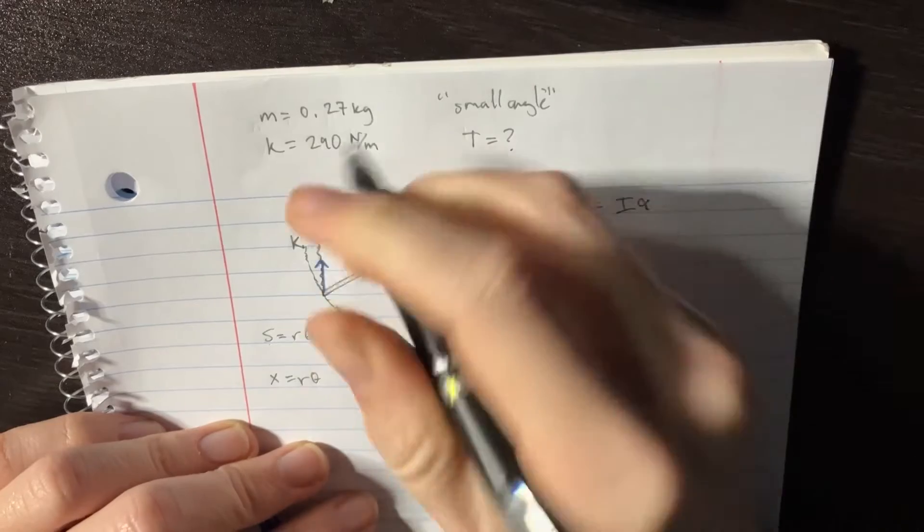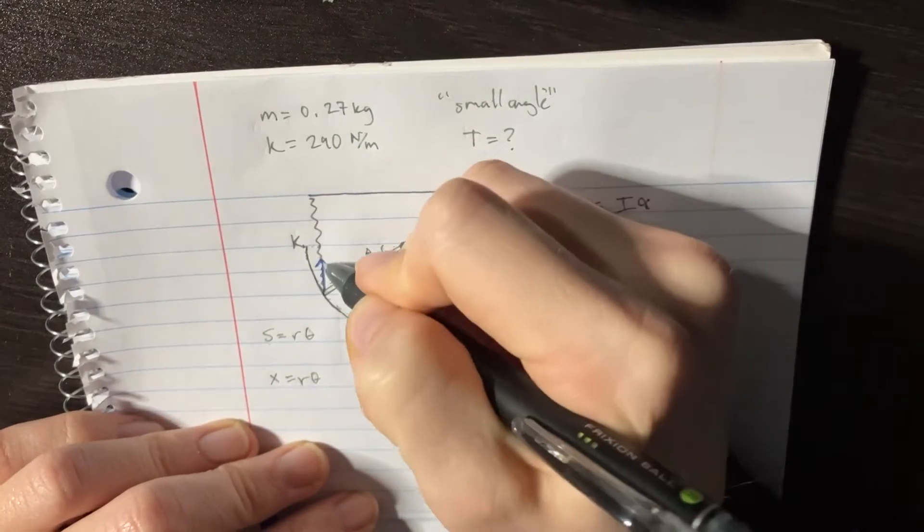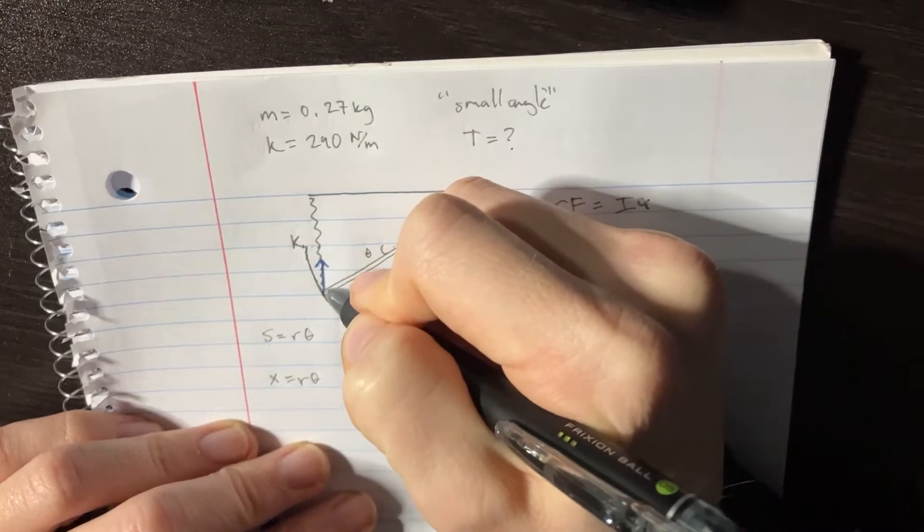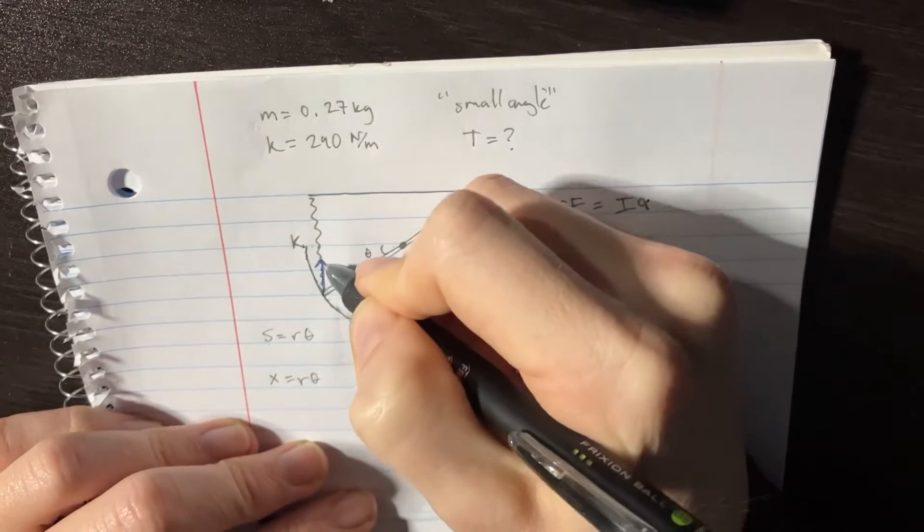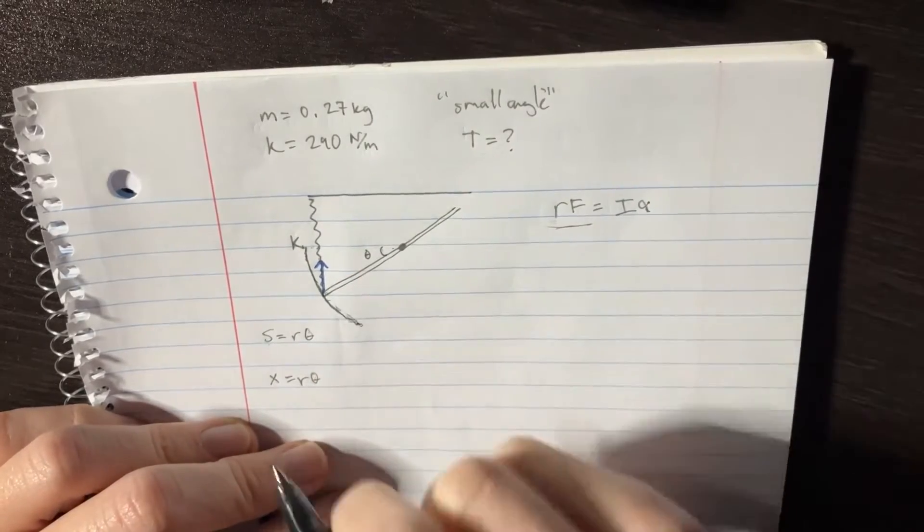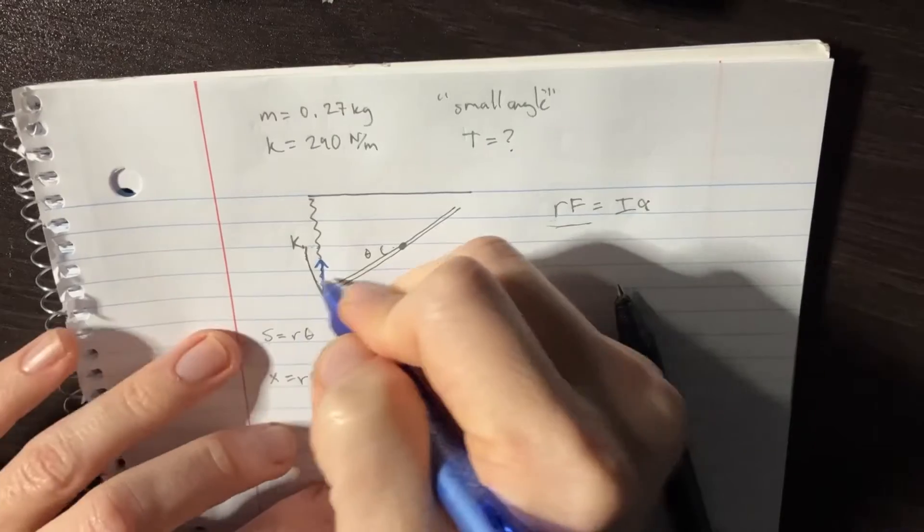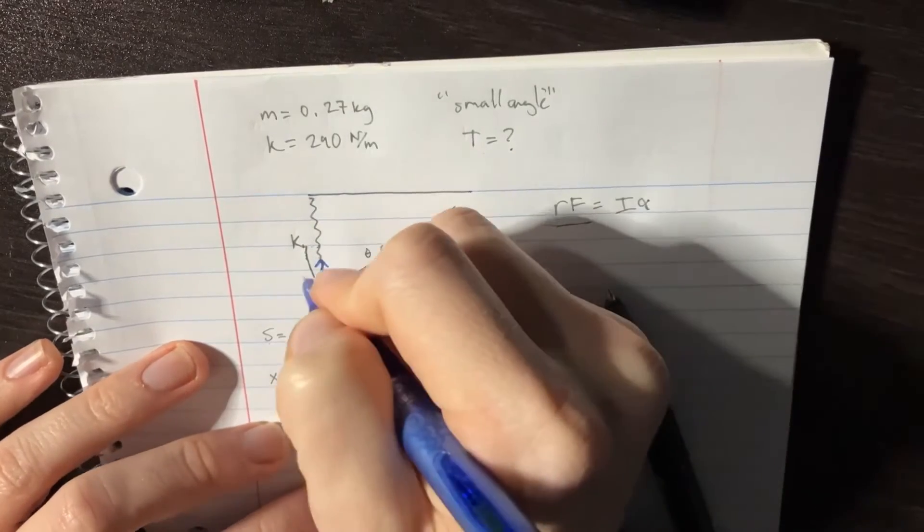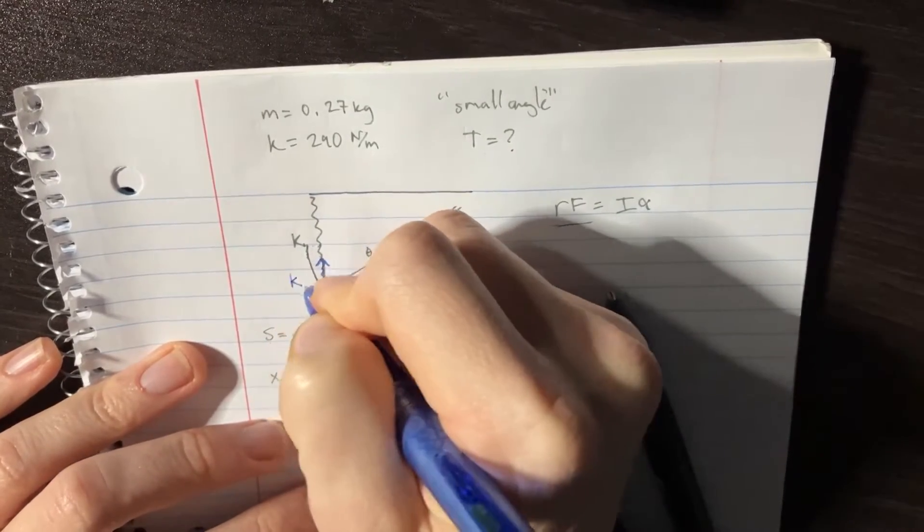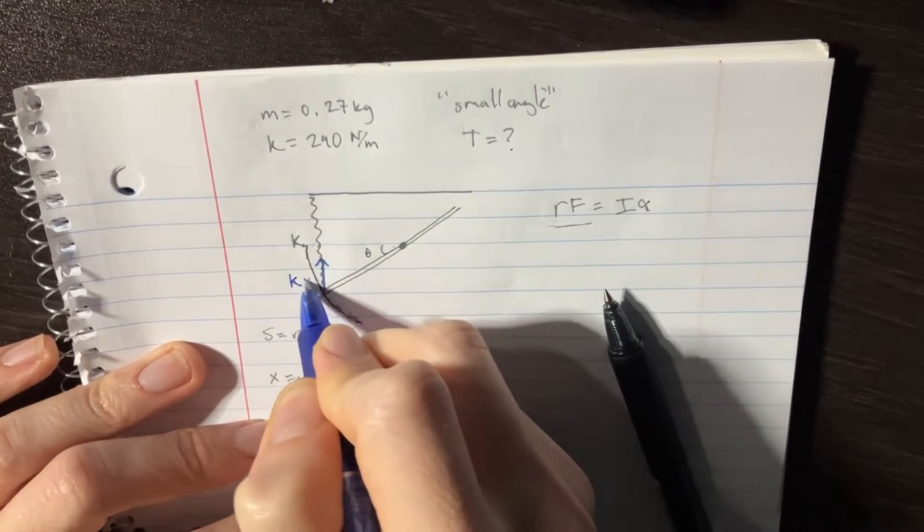Because it's such a small angle, that curved line is just about the same size as the actual distance itself. So instead of doing something really complicated here for the force, we can just say it's KX. That's the spring force - just a simple case, simple KX.